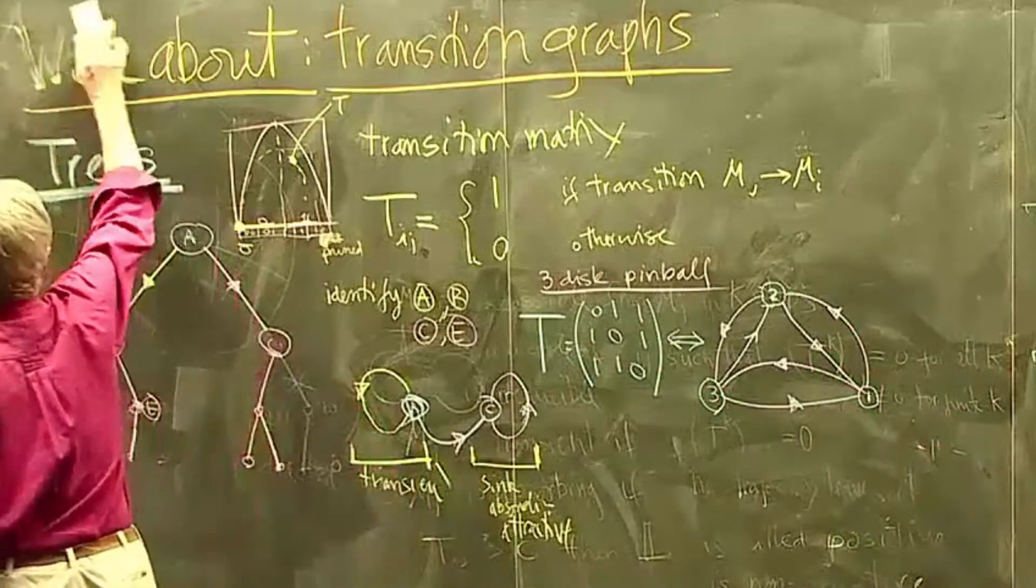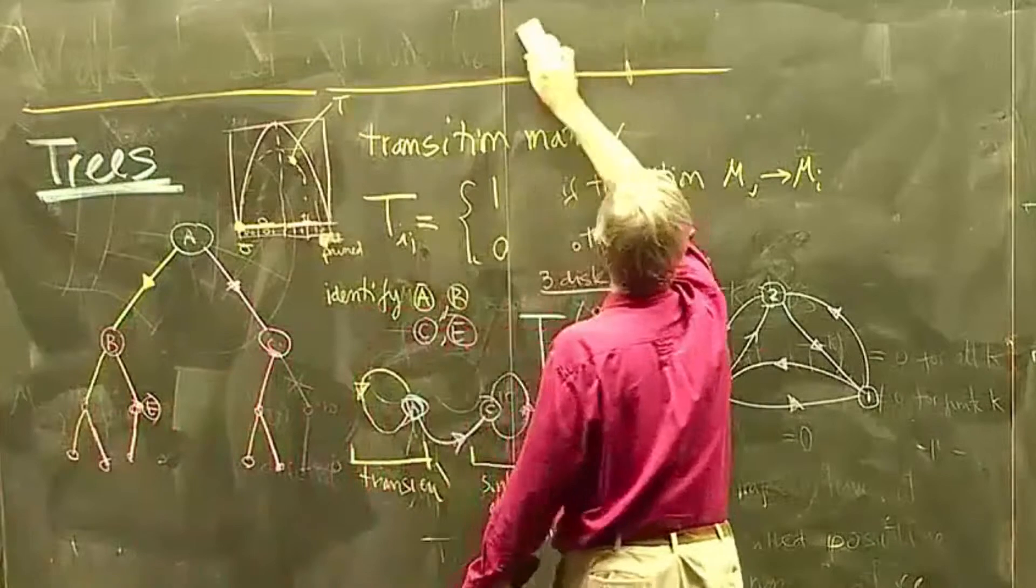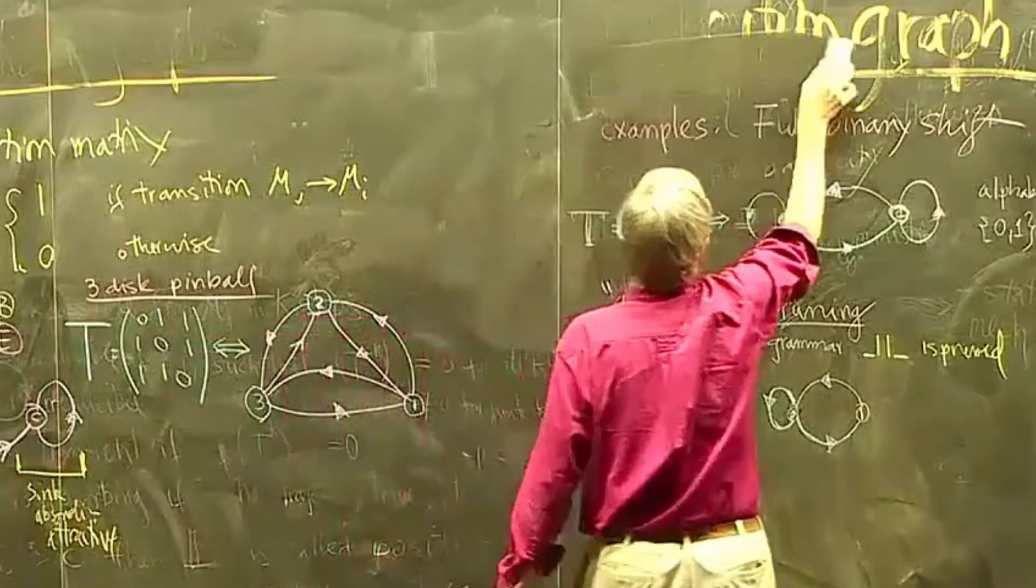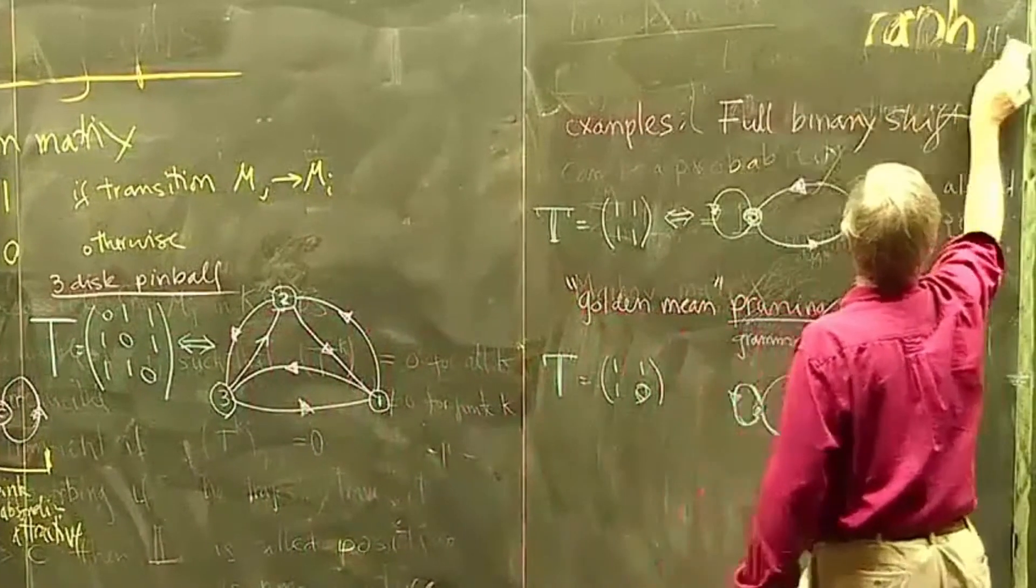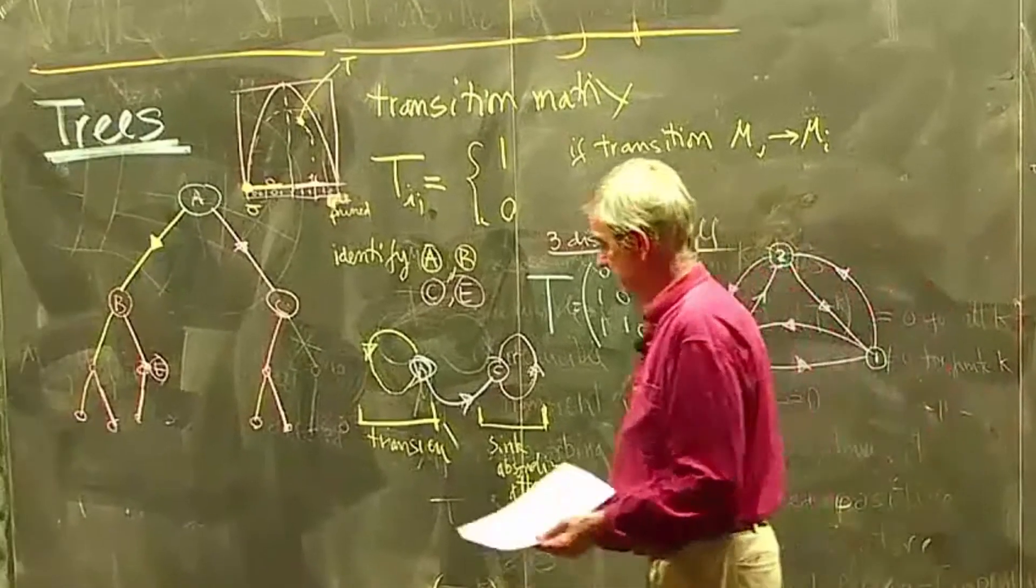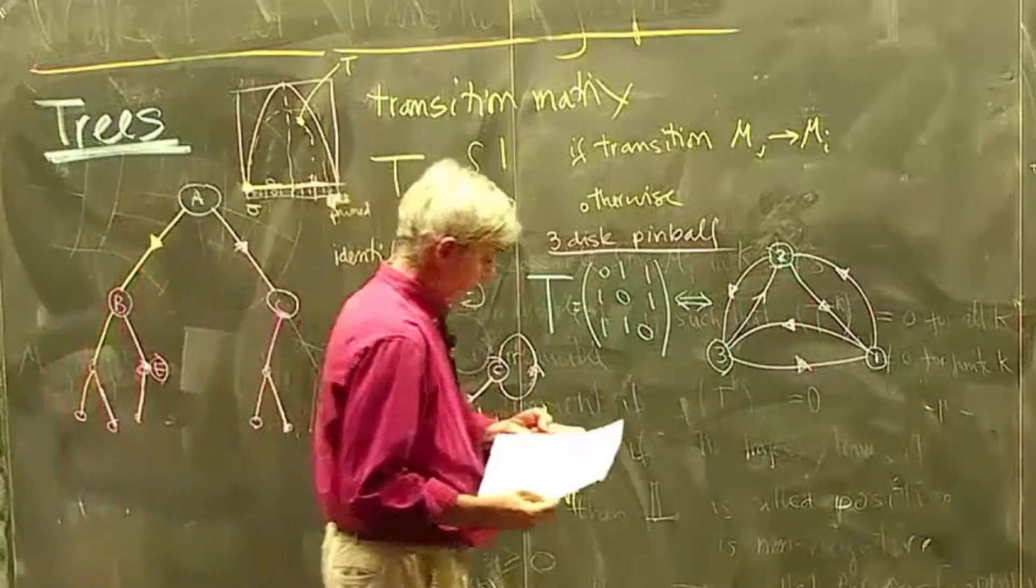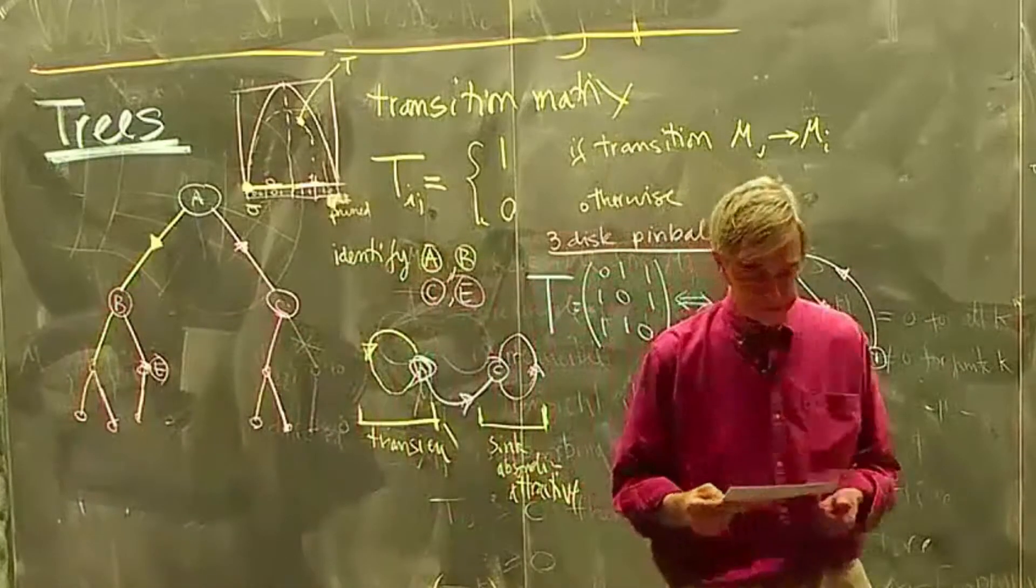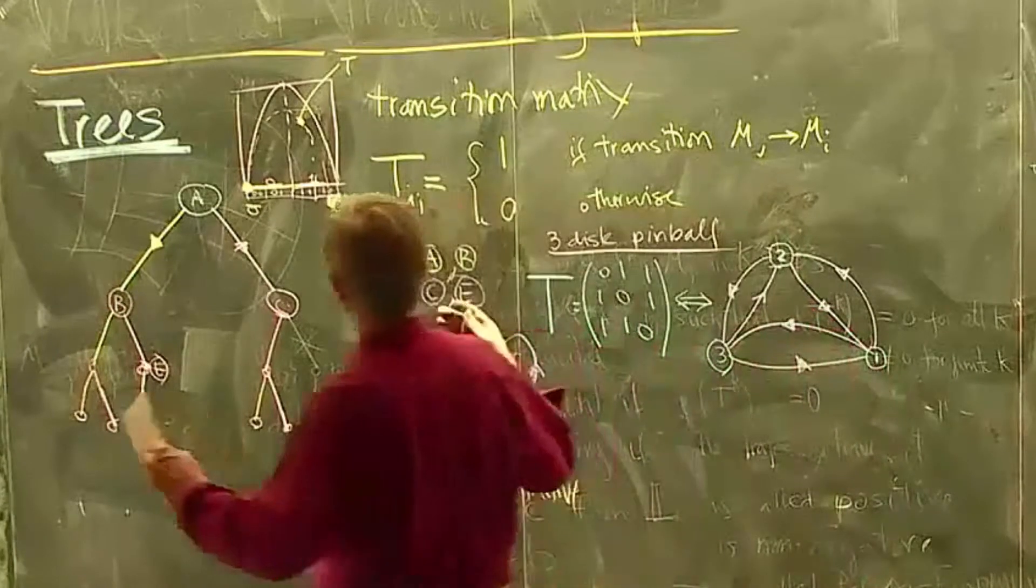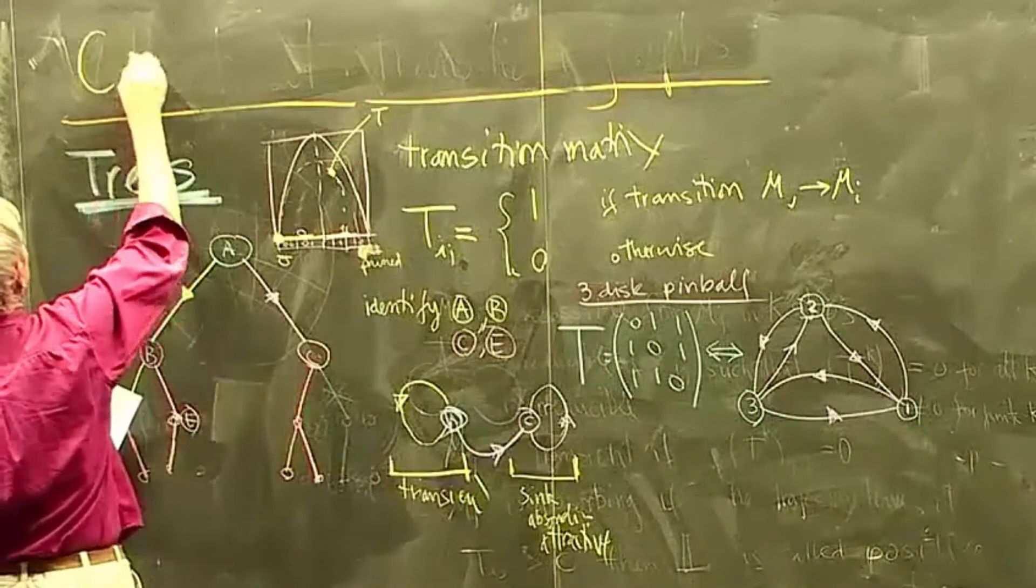And it turns out learning how to count 1, 2, 3, 4, 5 will actually get us almost about two-thirds of the way into the very fancy theory of zeta functions in dynamical systems and predicting averages and trace formulas and periodic orbit theory and everything else. So let's learn how to count.